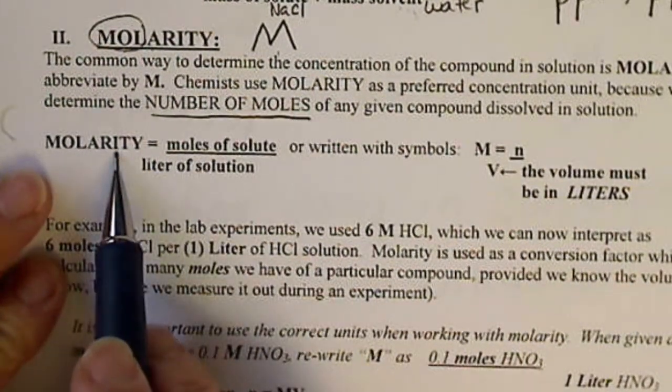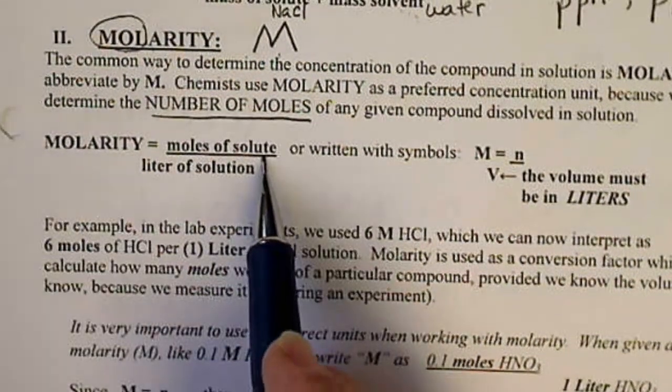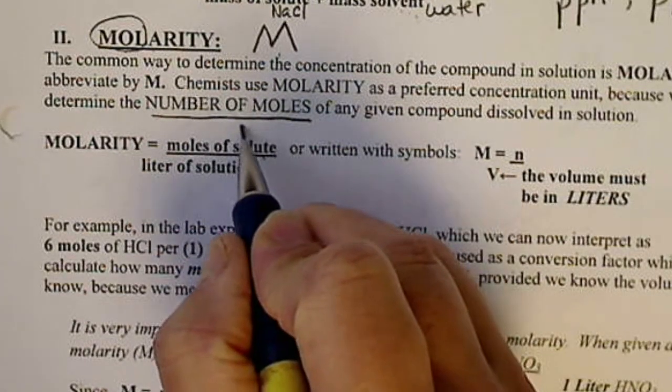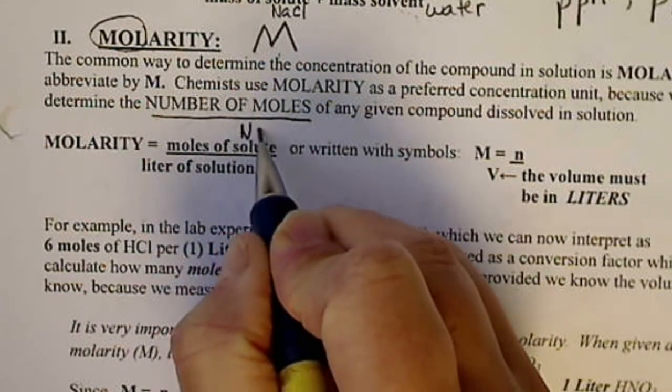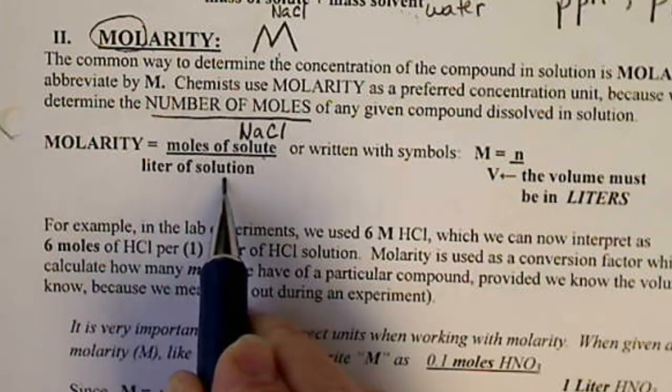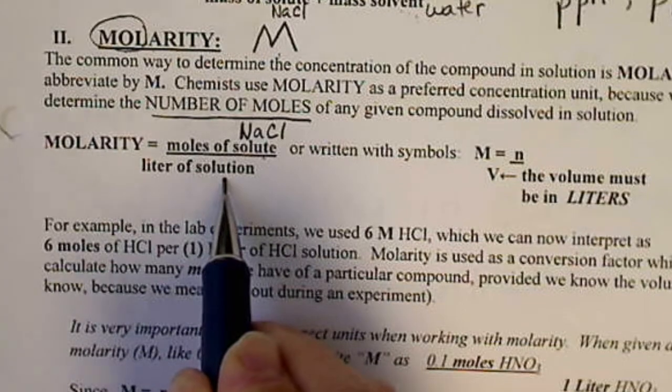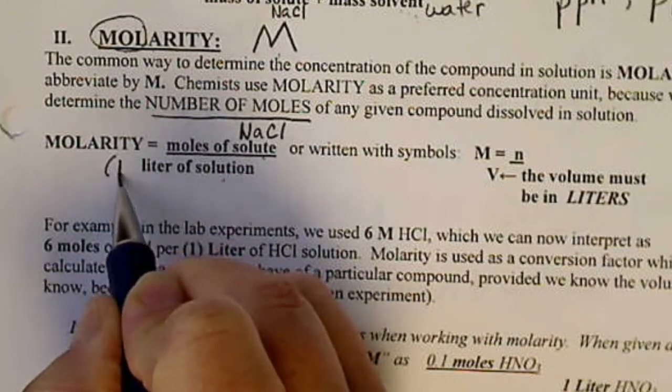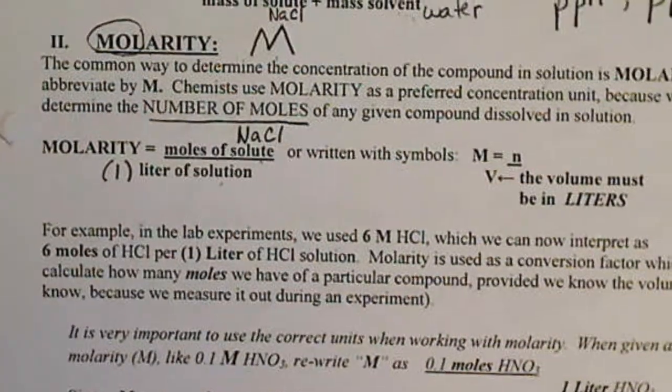So we're going to look at the definition of molarity. And that is molarity is the moles of the solute. So the example we've been using, if it was salt water, this would be how many moles of sodium chloride we had per liter of solution. And this really means for every one liter of solution.